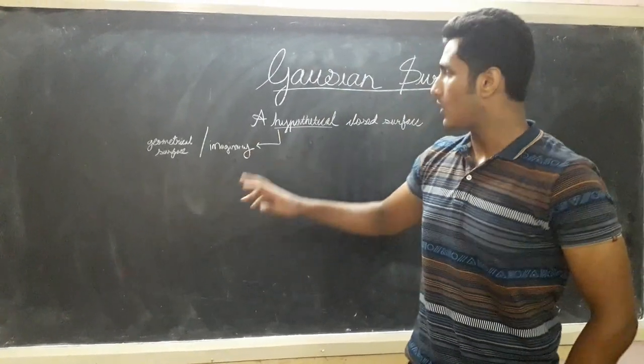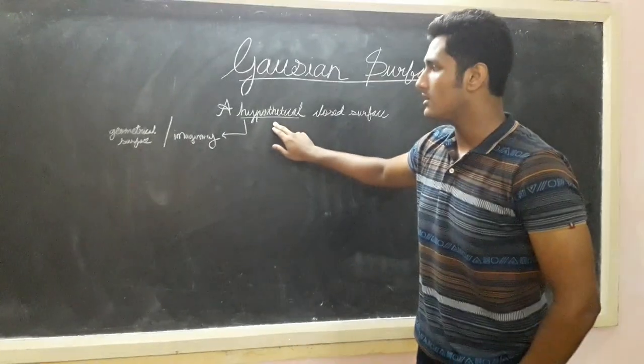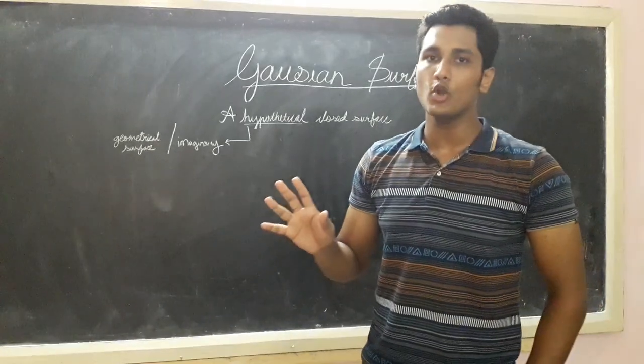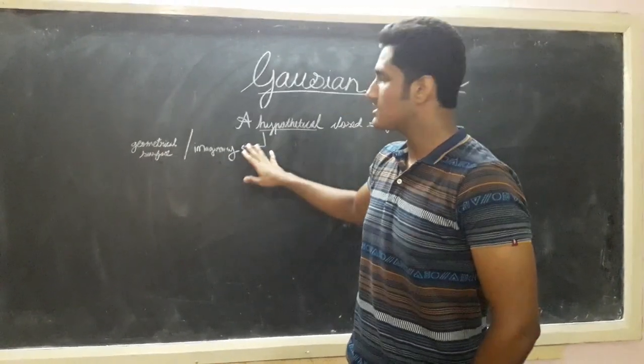And that surface is Gaussian surface. Now it is a hypothetical closed surface. What does hypothetical mean? Hypothetical means imaginary. So our Gaussian surface is going to be a geometrical surface which is hypothetical, which is imaginary.